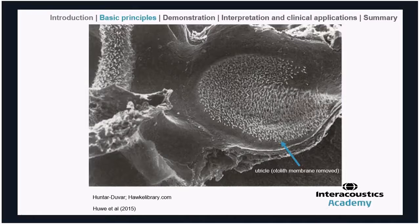Approximately around the midline of the utricle is an area with a slightly different tone — where the hair cells are a little thinner. This is known as the striola, or midline. It's a very important concept that there's a dividing point around which the hair cells are positioned. To the left of the micrograph you can also see the crista from one of the semicircular canals.